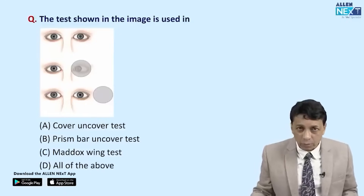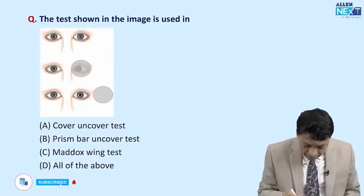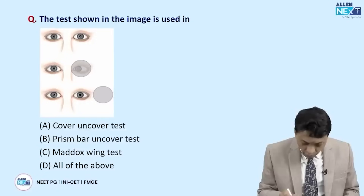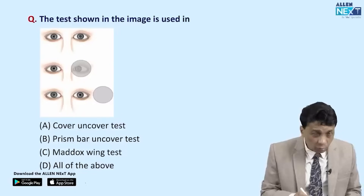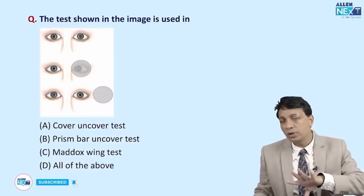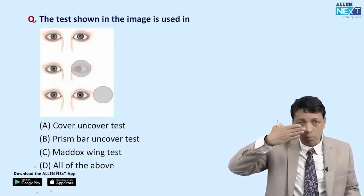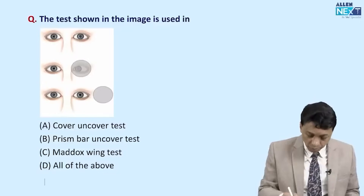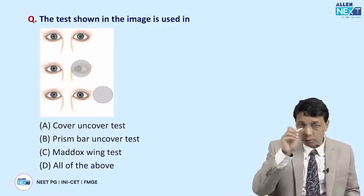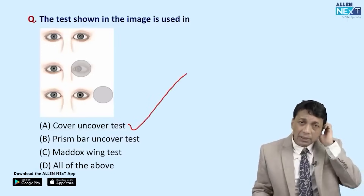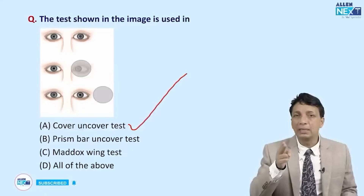These questions are taken from previously asked questions (PYQs). The test shown in the image: first picture shows two eyes; second, an occluder is placed over one eye; third, it is removed. As the occluder is placed, the position of the eye moves inward — esotropia — because when occluded, the eye returns to its resting position, which in this case is inward. The answer is the cover-uncover test.